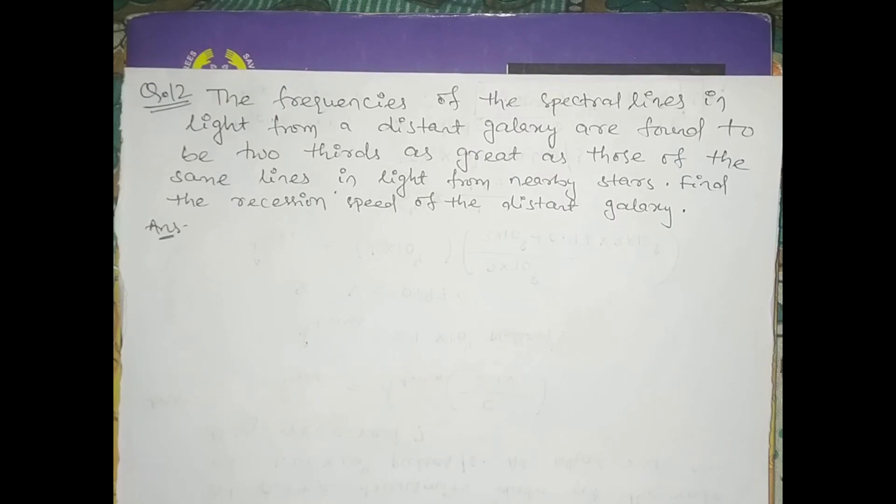The spectral lines in light from a distant galaxy are found to be two-thirds as great as those of the same lines in light from nearby stars. Find the recession speed of the distant galaxy.